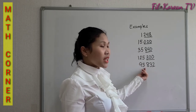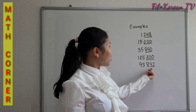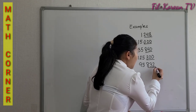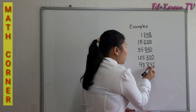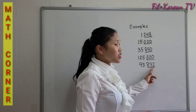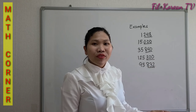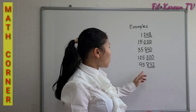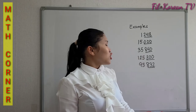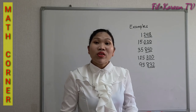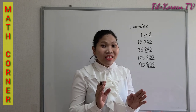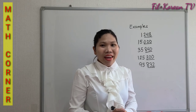Last example: 95,832. The last three digits form a number 832. 832 can be divided by 8. So, 95,832 is divisible by 8. And that is the rule for 8.